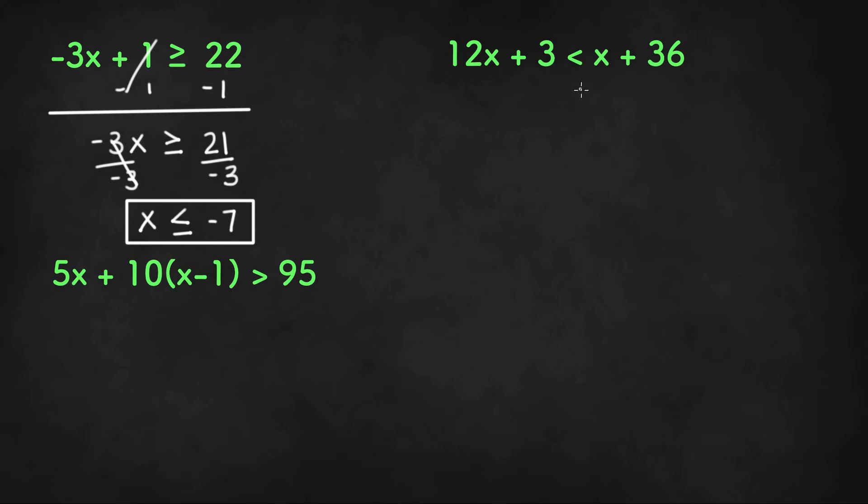So I'll start off by subtracting x from both sides, and that gives us 12x minus x or 11x plus 3. We're going to bring down the sign and that is less than 36.